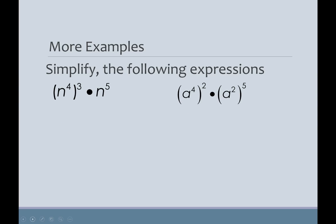Alright. More examples. Now, we've got kind of a combination of things. And just like order of operations, we're going to take the power to the power first, right? So, we're going to do N to the fourth to the third first, which is N to the four times three, and then we're going to multiply by N to the fifth. So, there's a couple steps here.